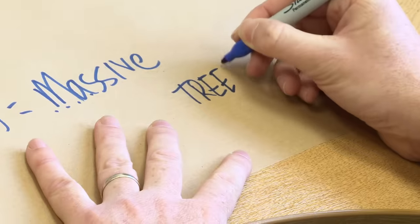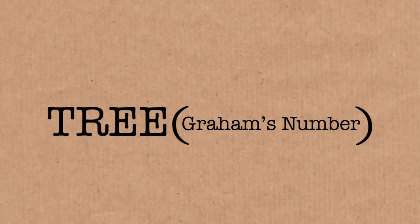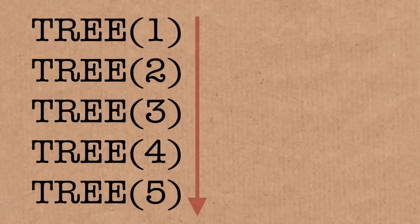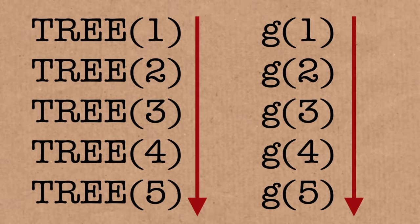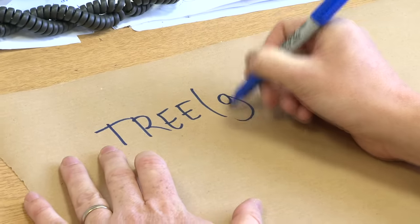Of course you could carry on with this sequence: Tree(4), Tree(5), Tree(6), in general Tree(n). You could even think about Tree of Graham's number. So we've got these two sequences: Tree(n) and G(n) — the trees and the G's. We can build Tree of Graham's number, which is basically Tree of G(64).